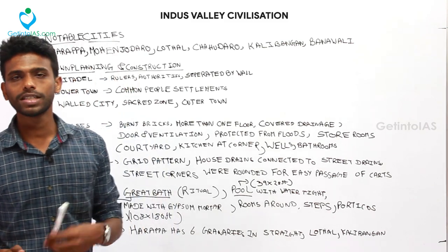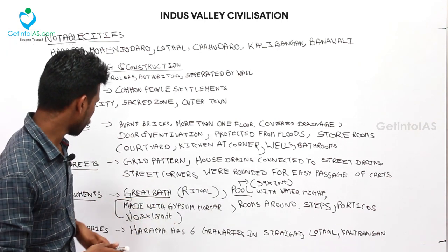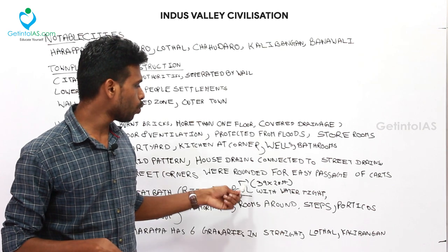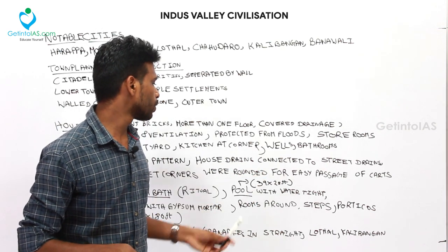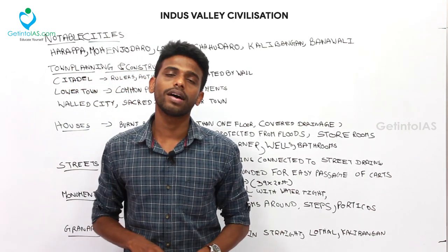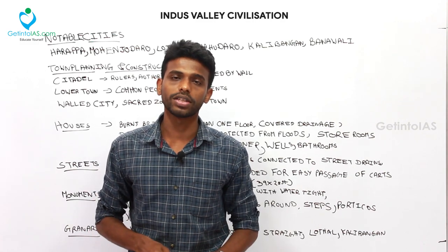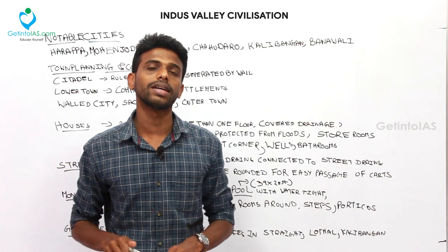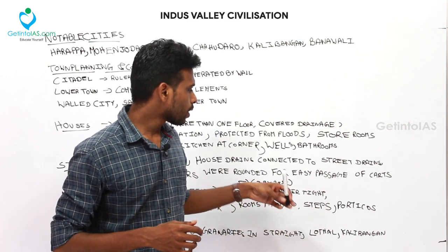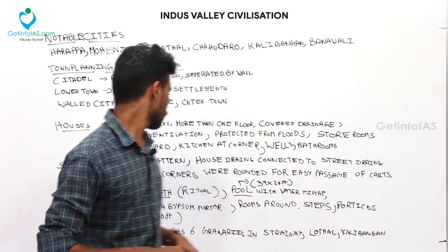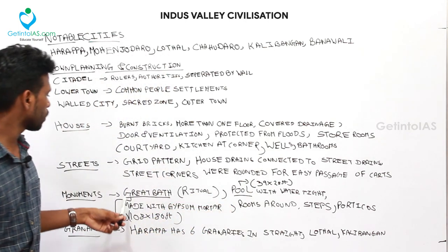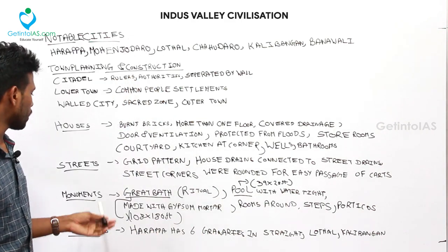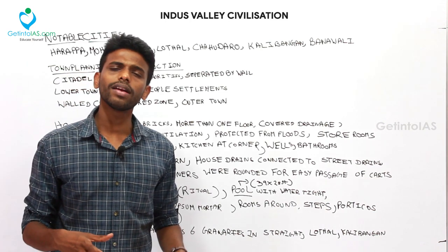Monuments and architecture were important for archaeologists to understand the civilization. One such monument was the Great Bath, which has an area of 108 by 180 feet. Inside it, a pool measuring 39 by 28 feet was present. Archaeologists believe the Great Bath had ritual purposes — people used to bathe there. It has rooms around it, believed to be for changing clothes after bathing. It had steps at both ends, porticos, and the pool was made watertight using gypsum mortar.